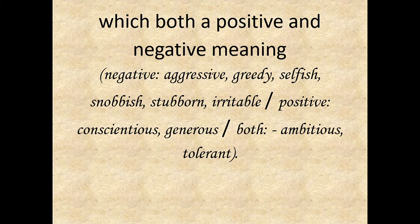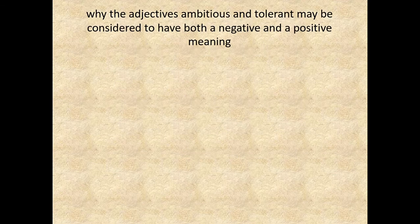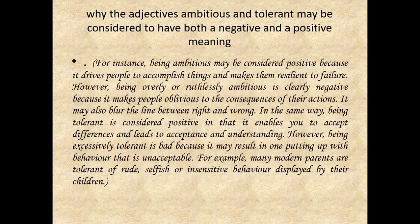There are two adjectives which are related to positive and negative at the same time: ambitious and tolerant. Why might ambitious and tolerant be considered to have both a negative and positive meaning? Being ambitious may be considered positive because it drives people to accomplish things and makes them resilient to failure. However, being overly or ruthlessly ambitious is clearly negative because it makes people oblivious to the consequences of their actions. It may also blur the line between right and wrong.